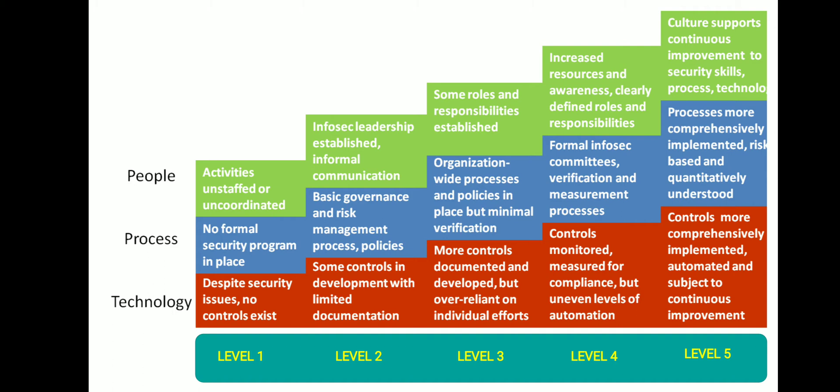At level three, organizations have established a comprehensive set of organization-wide security processes, policies, and documented technical controls. However, they typically remain over-reliant on individual efforts — they rely on people and not on technology. Processes such as change management, audit, and supply chain security still need to improve. They also need to focus more on role-appropriate security knowledge and awareness, as well as advancing on security monitoring, analytics, privilege access management, and control sophistication. They also need to look at key performance indicators and key risk indicators.